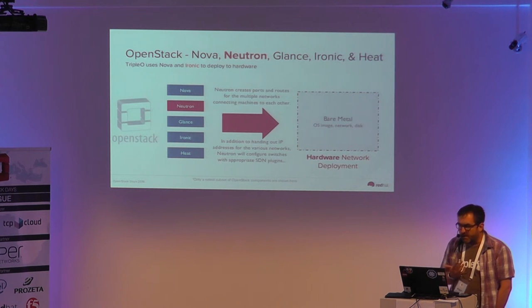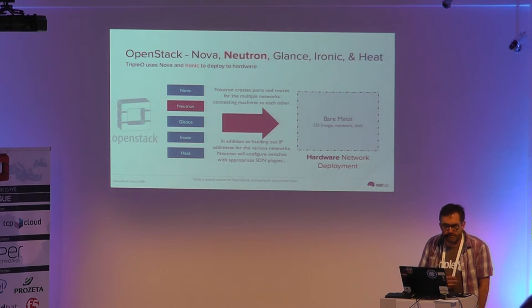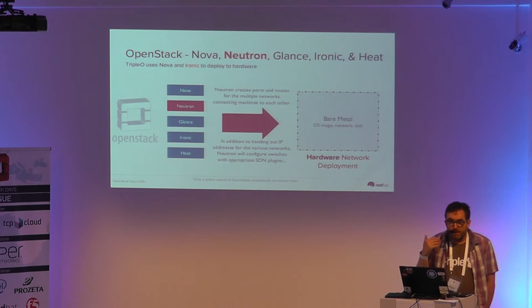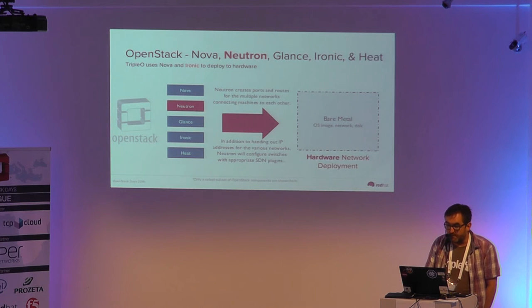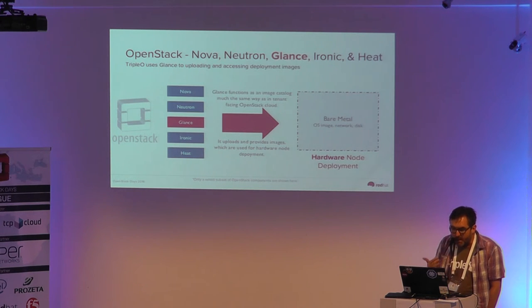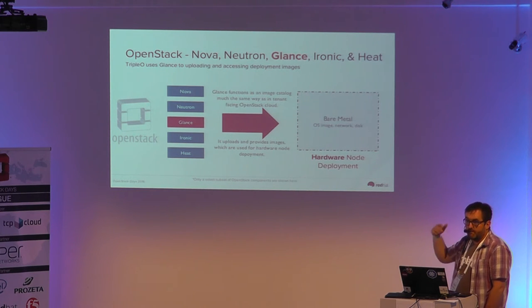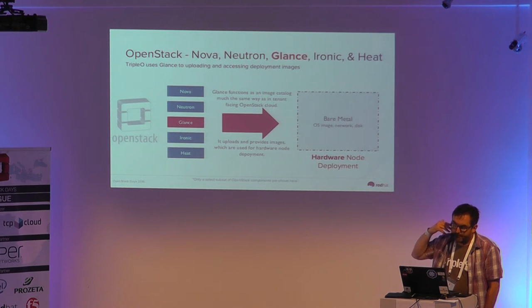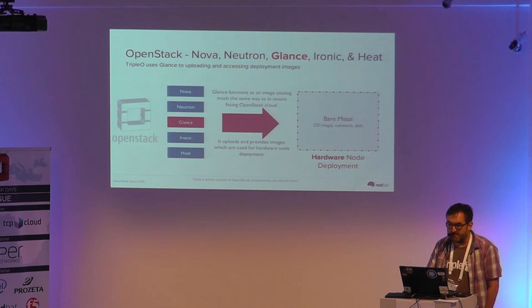Neutron is networking again, but in this case it creates ports and routes to allow physical machines to connect to each other. In some cases, Neutron will do actual physical switch configuration where it has SDN plugins for particular supported hardware. Glance plays the same role of containing OS images, and part of the definition matches a particular machine with an image in Glance — that's the software that actually gets put on the machine.